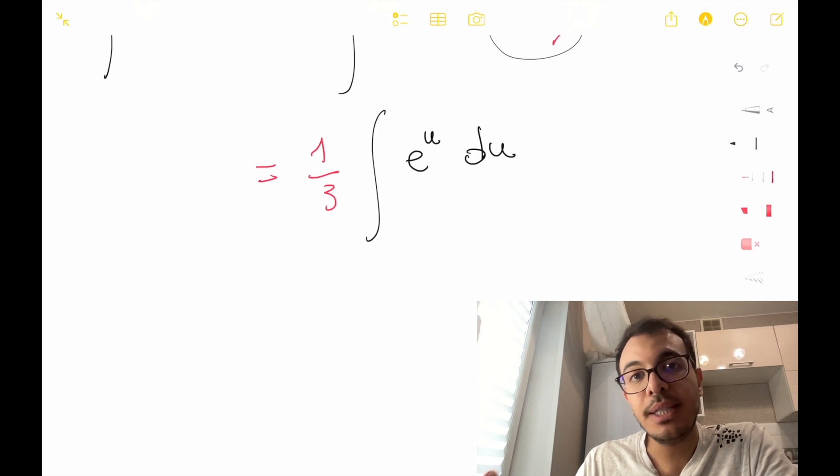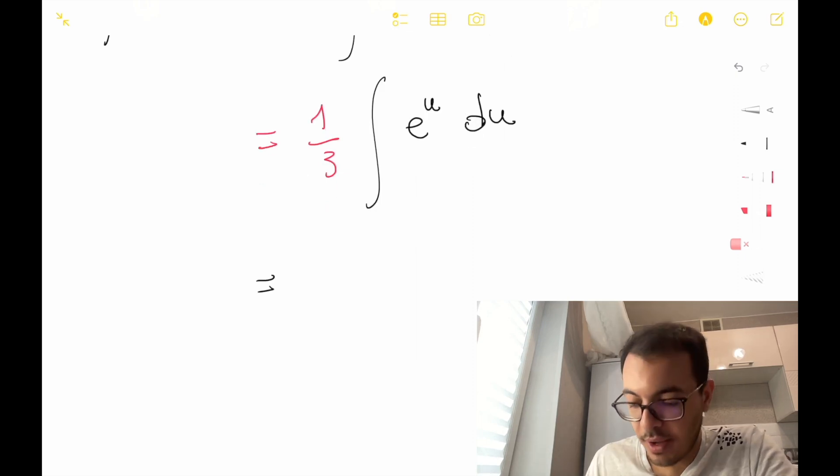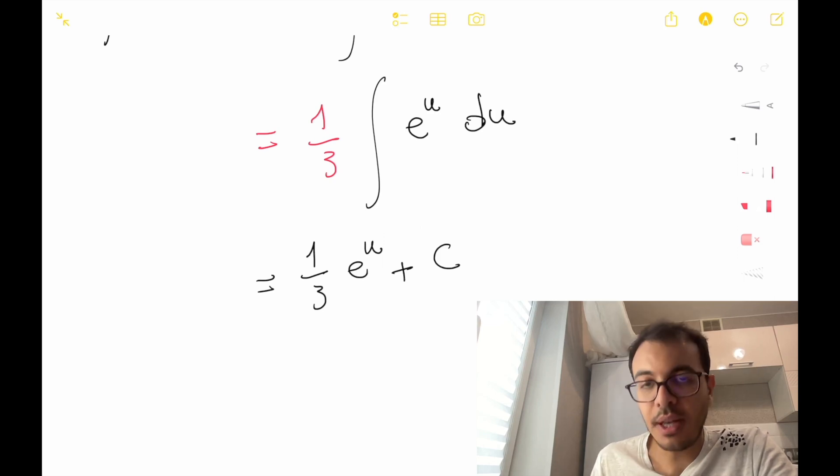Now, the integral has become simpler as it reduces to the integral of a basic exponential function. Solving the new integral, we have 1 over 3. This integral is actually e to u plus c.